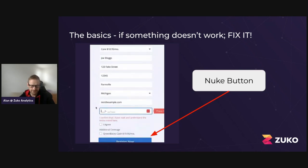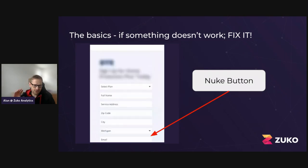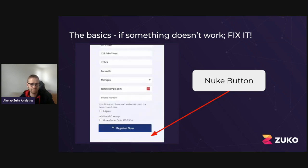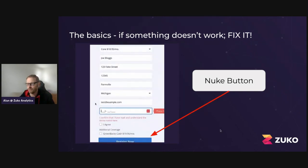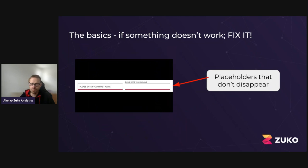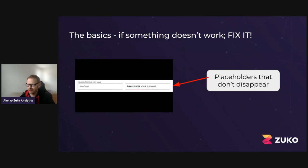All the things I'm going to talk about today — you should have a look at your own forms and see if they're appearing. It's a very quick way of seeing if there's anything clearly obvious. You can also add products like Zuko if you want to understand more and find additional issues. Other broken things you might see: placeholders — you can see someone's typing in information but the placeholder is staying there. They can't see what they've entered. It only goes away when they move on. Not ideal — that's a clear UX break that you need to fix.